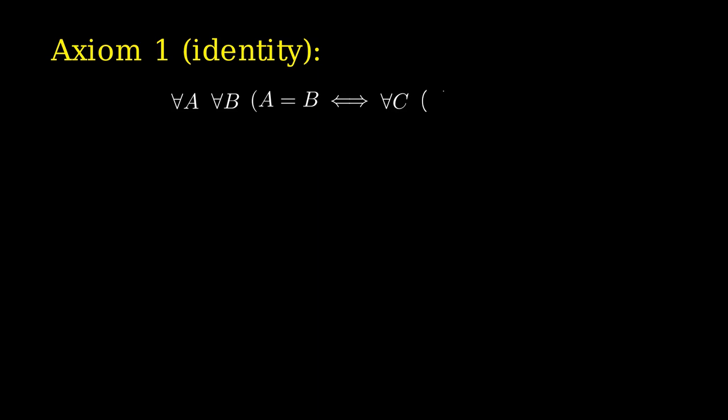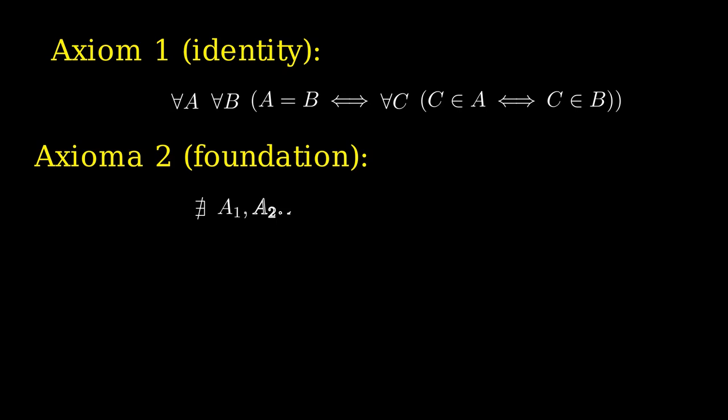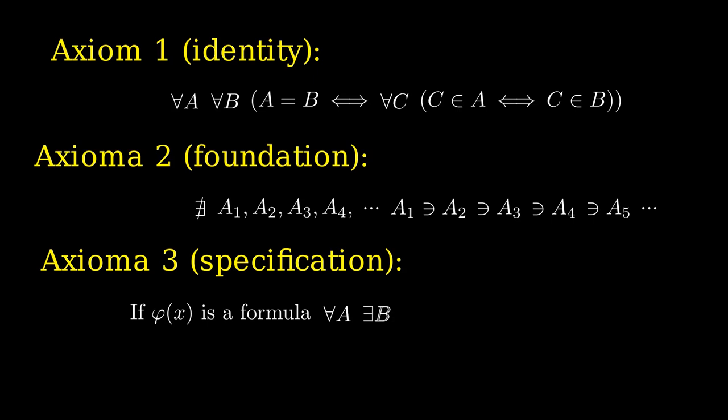So far we have seen axiom 1, which says that two sets are equal if they have the same elements — basically the definition of equality. Axiom 2 says you cannot have a sequence of sets A1, A2, A3 such that A1 has A2 as an element, A2 has A3 as an element, and so on forever. And axiom 3, which is really important, says that if you have a formula phi and a set A, you can define the set B of all elements of A that satisfy phi.